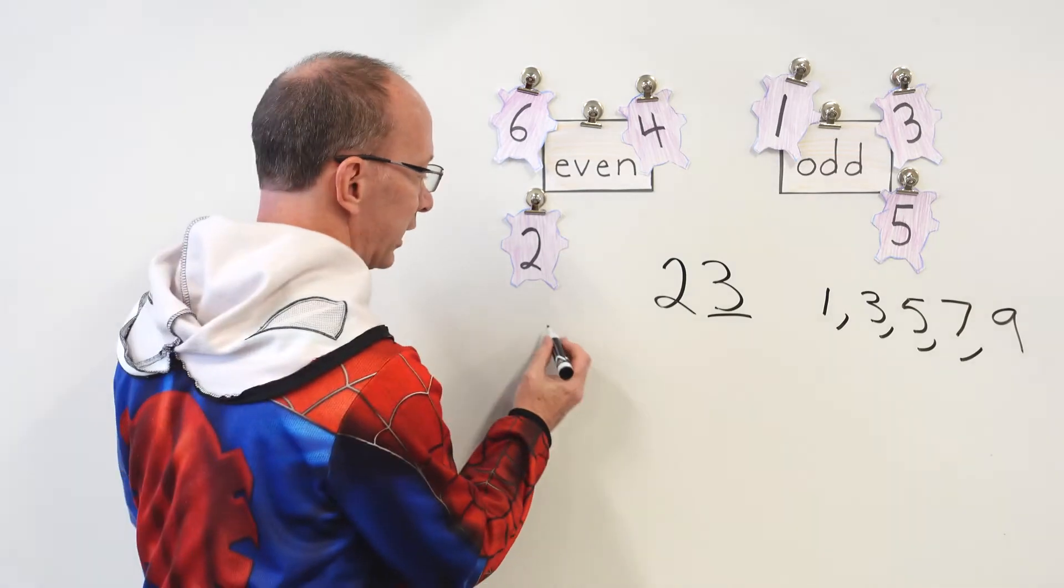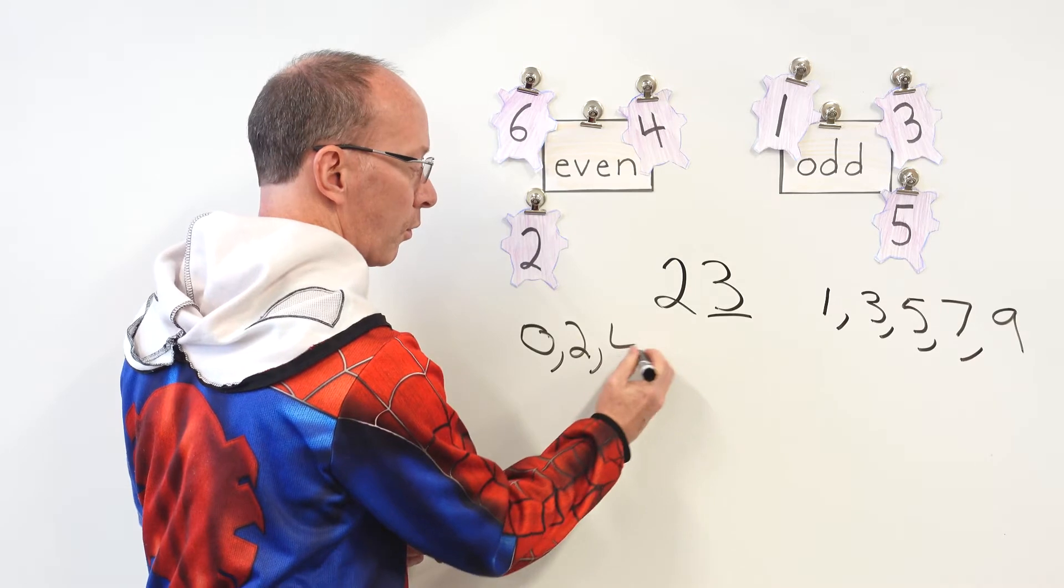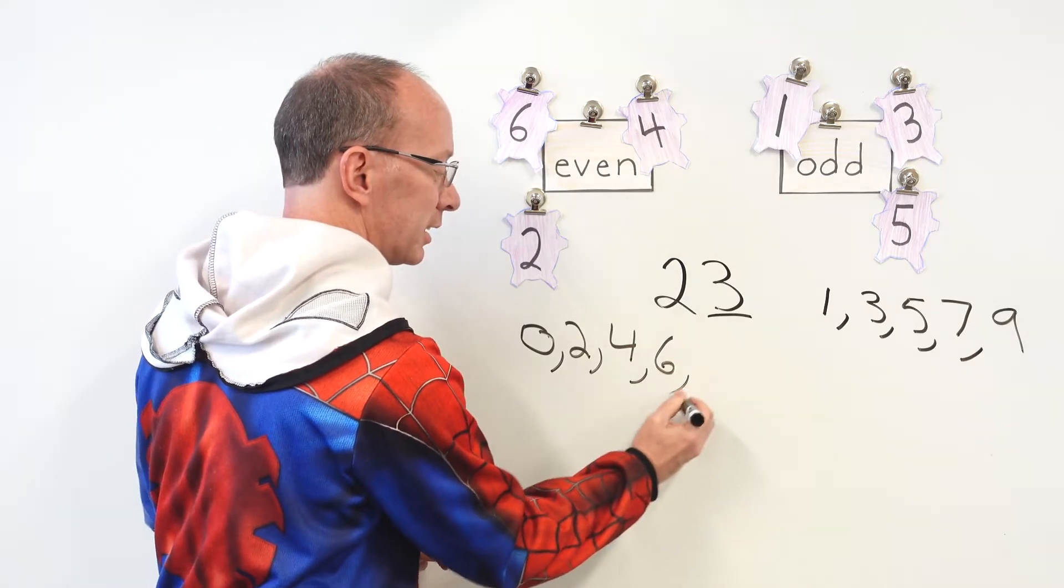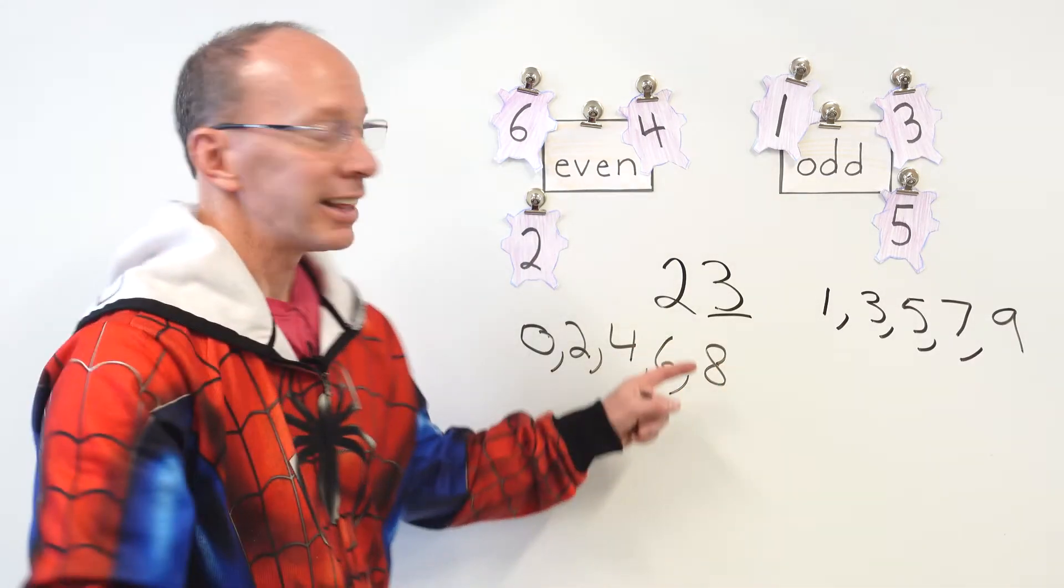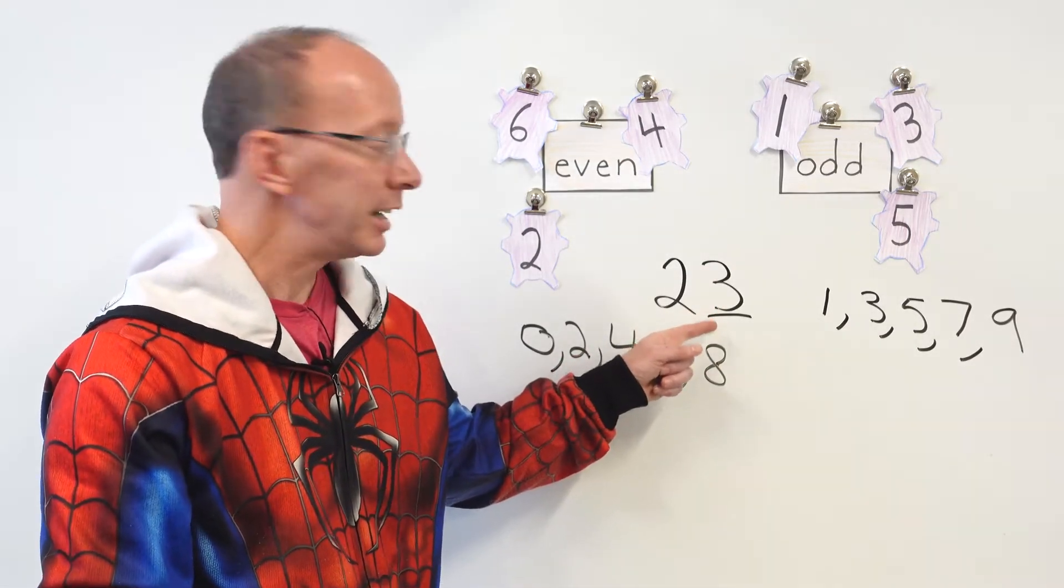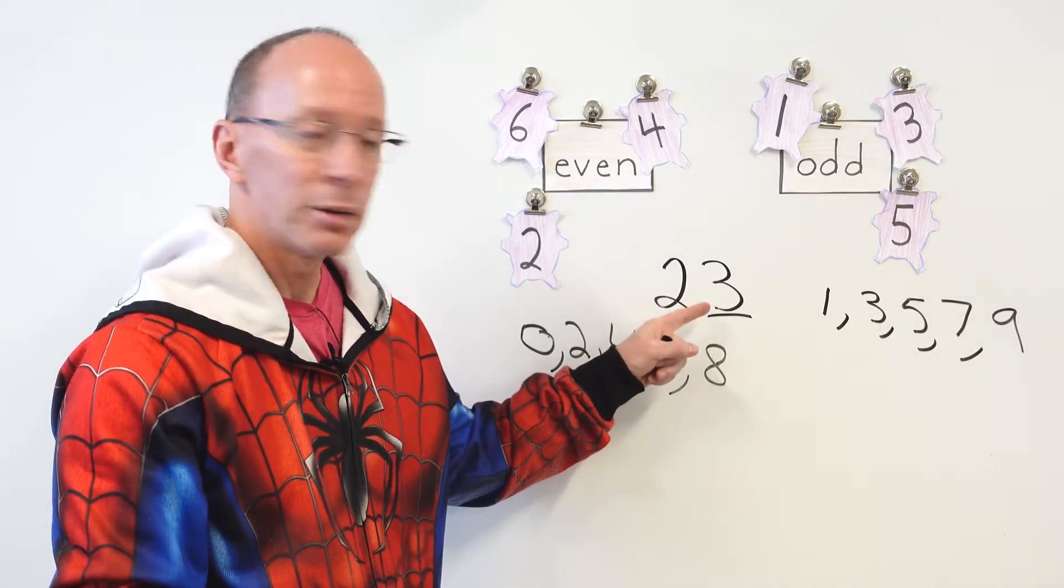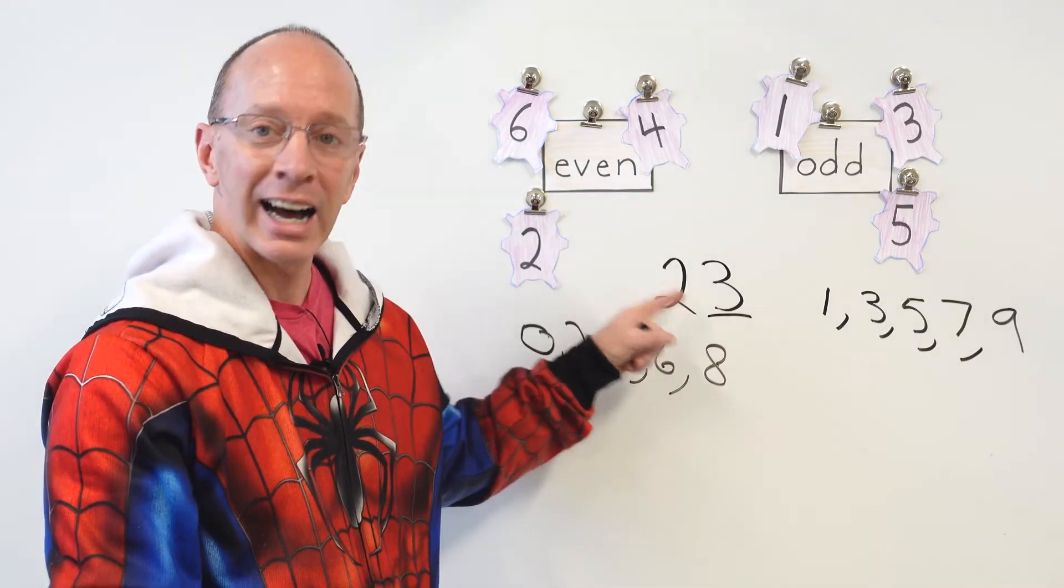If it is a number like 0, 2, 4, 6, or 8, then that will be an even number, okay? So 23 ends in an odd number. The odd number is in the 1's place. So that is an odd number.